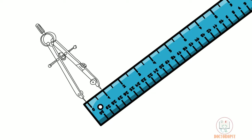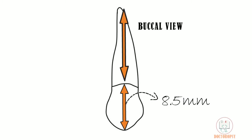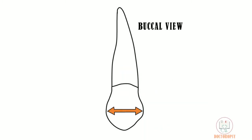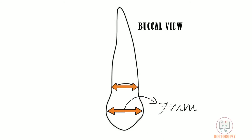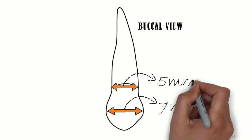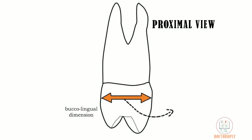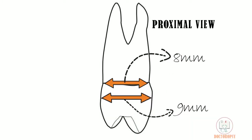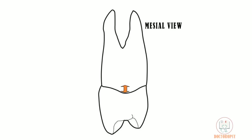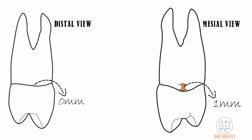Regarding measurements: the cervico-incisal length of the crown is 8.5 mm and root length is 14 mm. Mesiodistal diameter of the crown at the level of the contact area is 7 mm and at the cervix is 5 mm. Labiolingual diameter of the crown at the height of contour is 9 mm and at the cervix is 8 mm. The cervical line from the mesial aspect has a curvature of 1 mm and from the distal aspect it is flat.